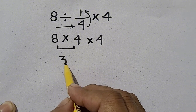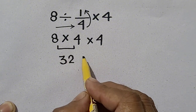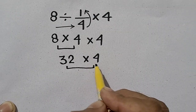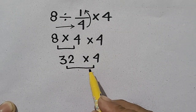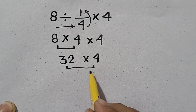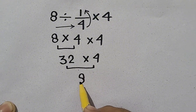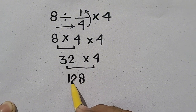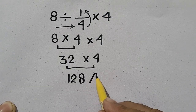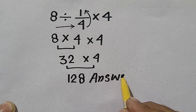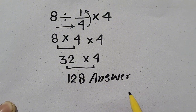...equal to 32, times 4. Now it is simple multiplication: 32 times 4 — 2 times 4 is 8, and 3 times 4 is 12 — so 128 will be our correct answer.